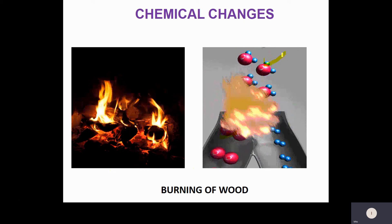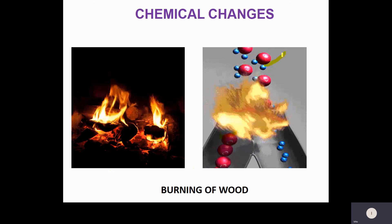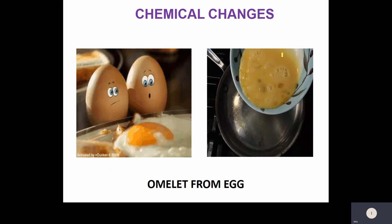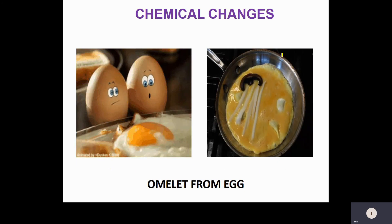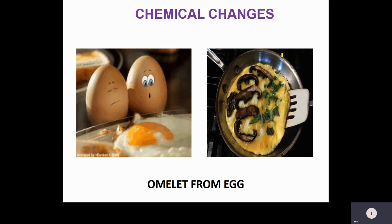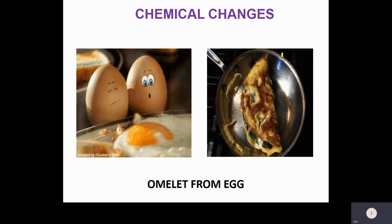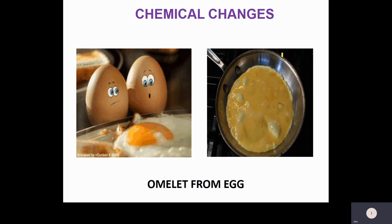More examples of chemical changes: when we make an omelette from an egg, there is also a change that can be considered a chemical change, because a new substance is formed.